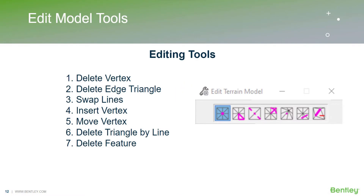Moving to the next slide, which is the Edit Model tools. These are the tools used to edit the terrain model — if you want to delete any extra triangles or extra vertices, you can delete them with these tools. I'll be demonstrating all of them: Delete Vertex, Delete Edge Triangles, Swap Lines, Insert Vertex, Move Vertex, Delete Triangle Bar Lines, and Delete Features. Delete Feature is very similar to removing features, as shown in the first part of this presentation. I'll go ahead and switch to the software.